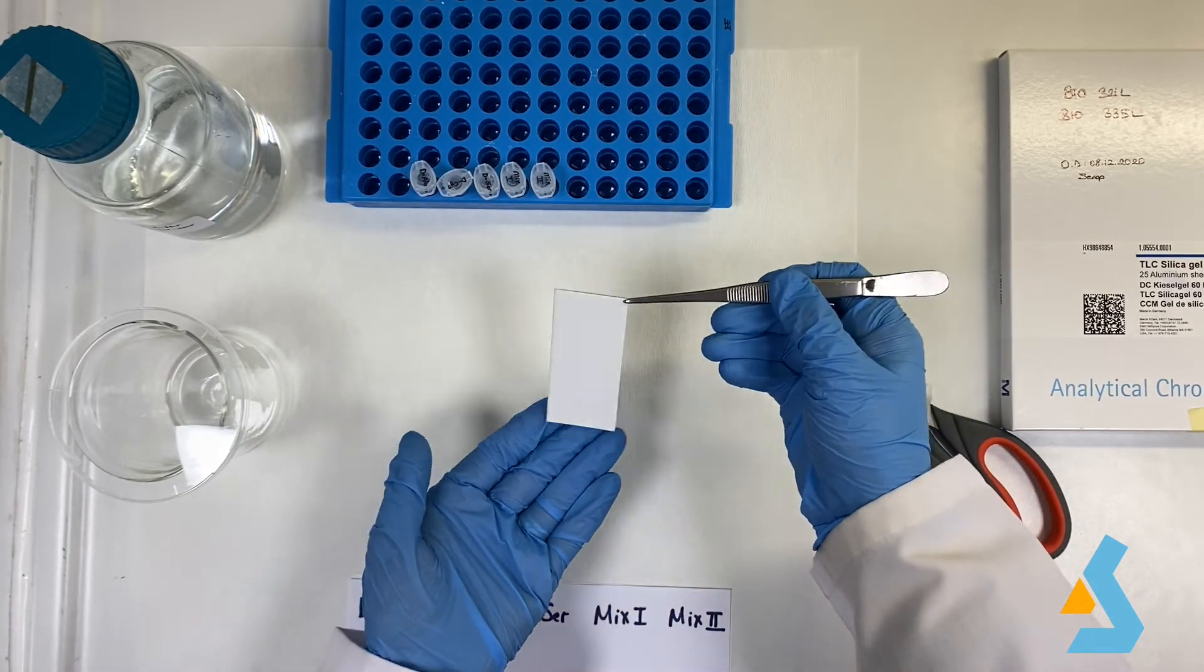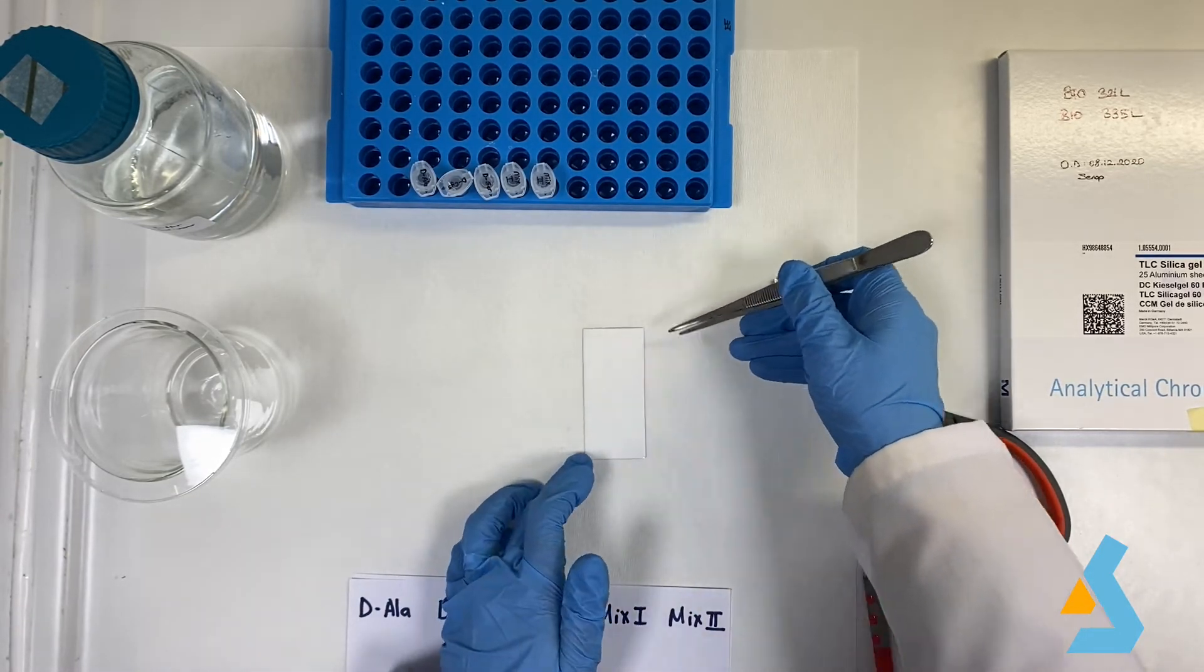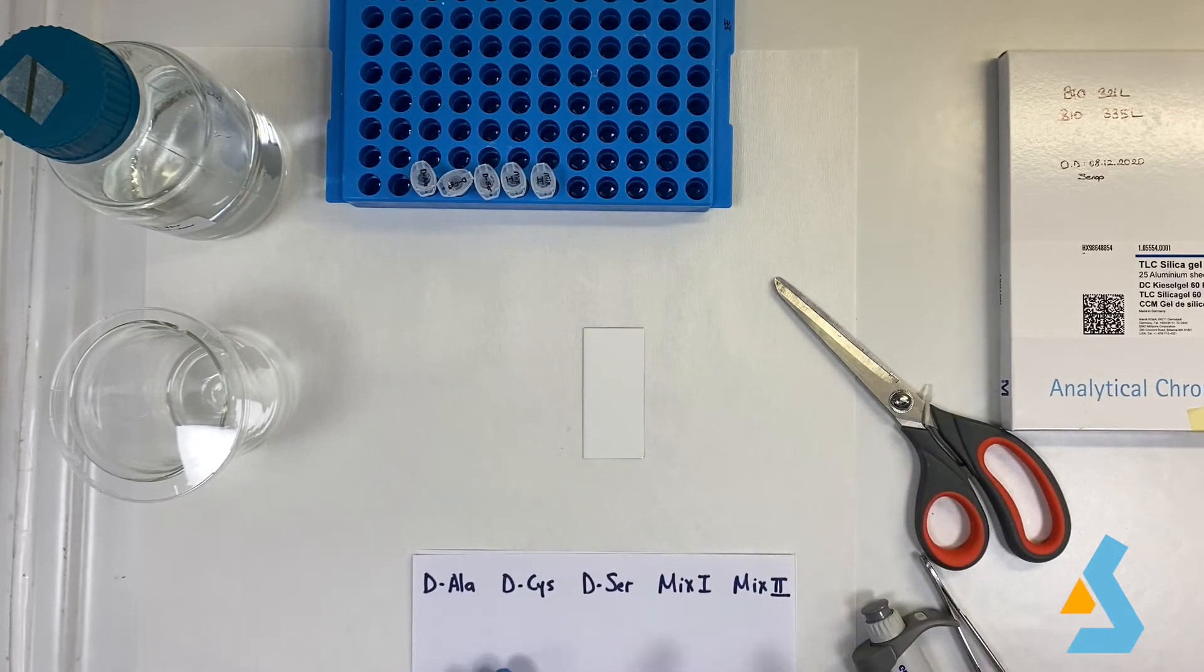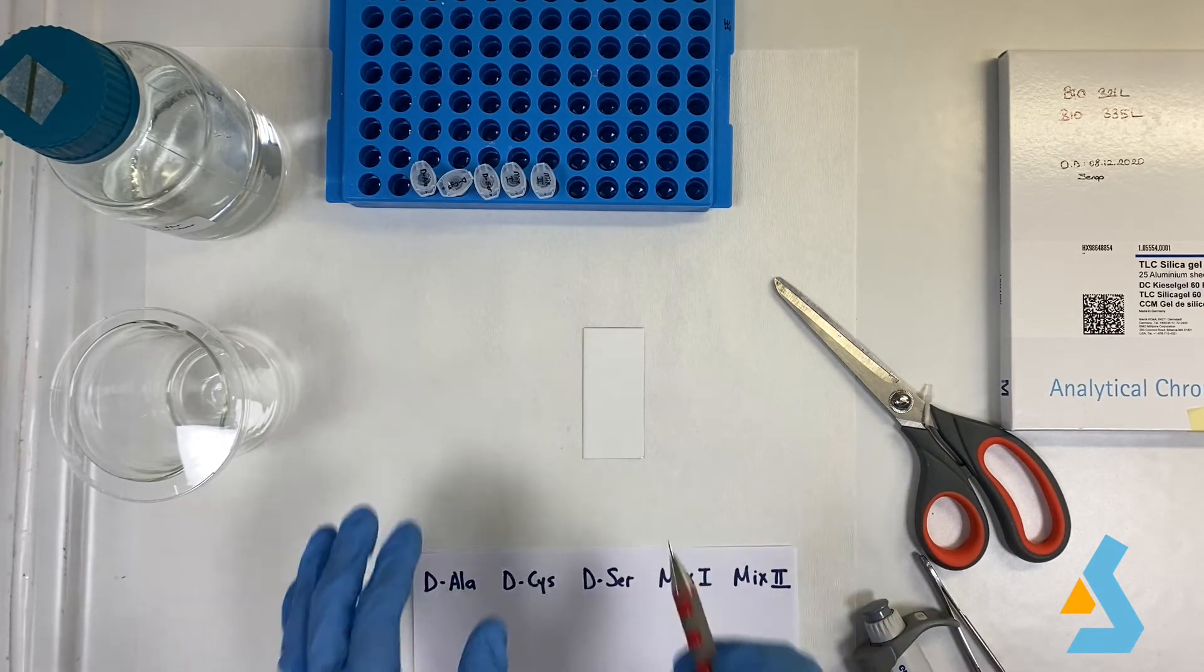In this experiment, we have five different samples as D-alanine, D-cysteine, D-serine, and two unknown mixtures.